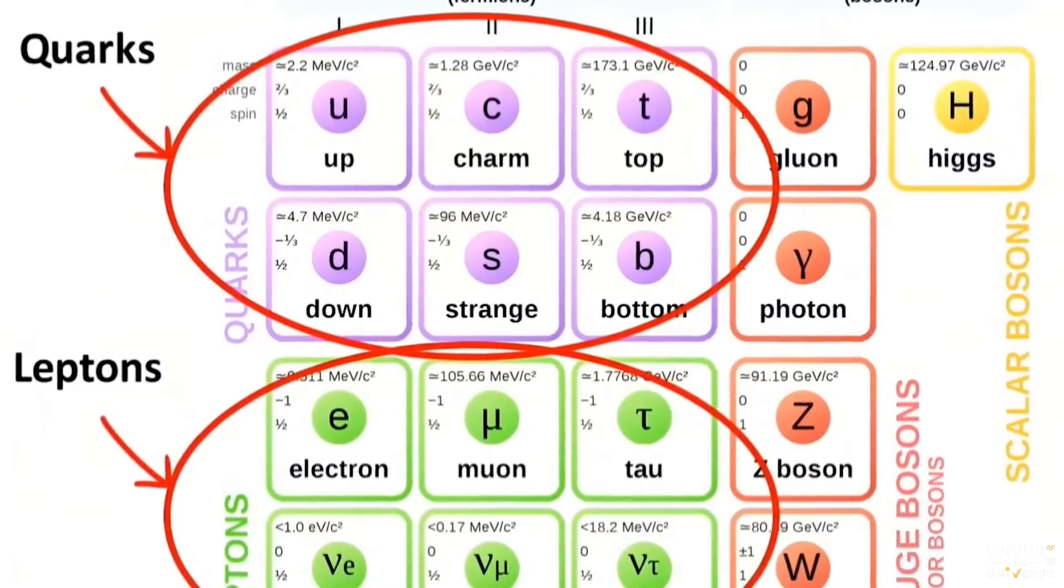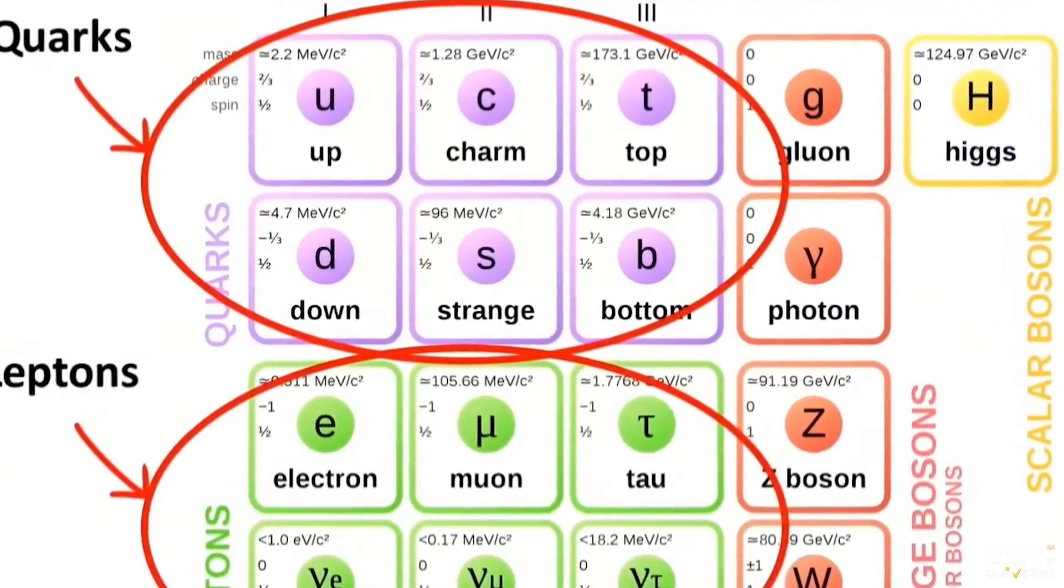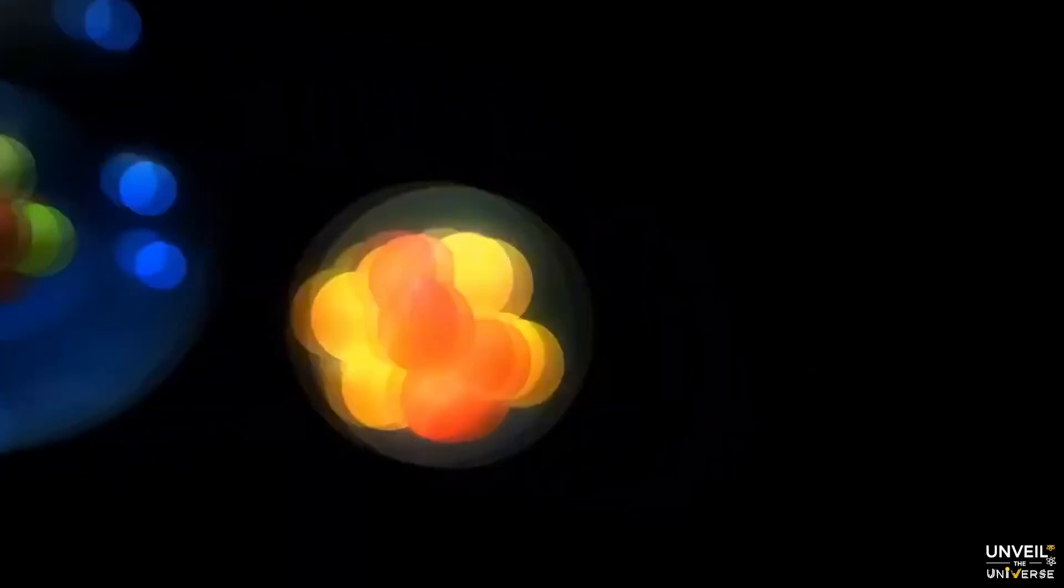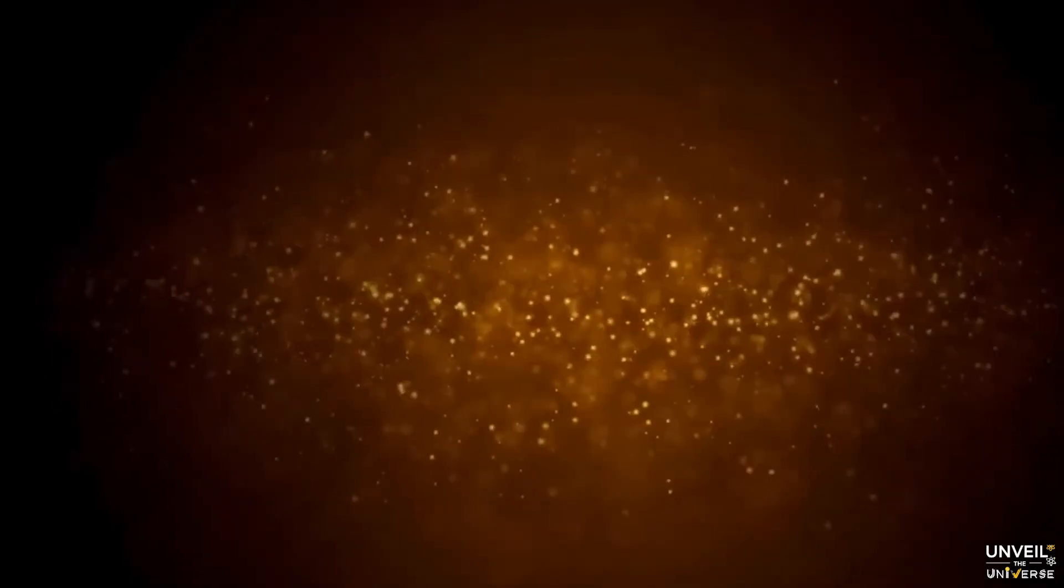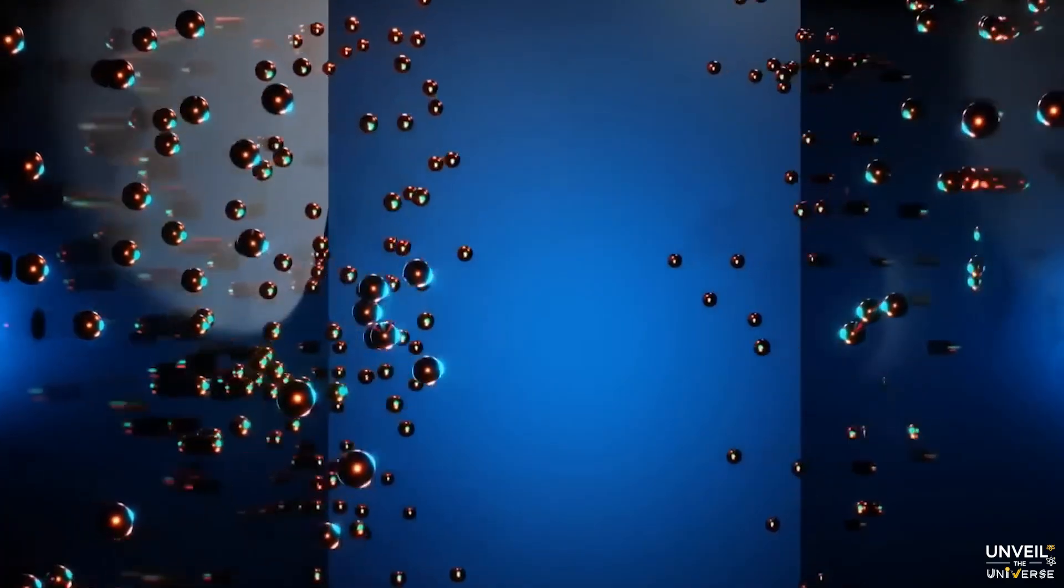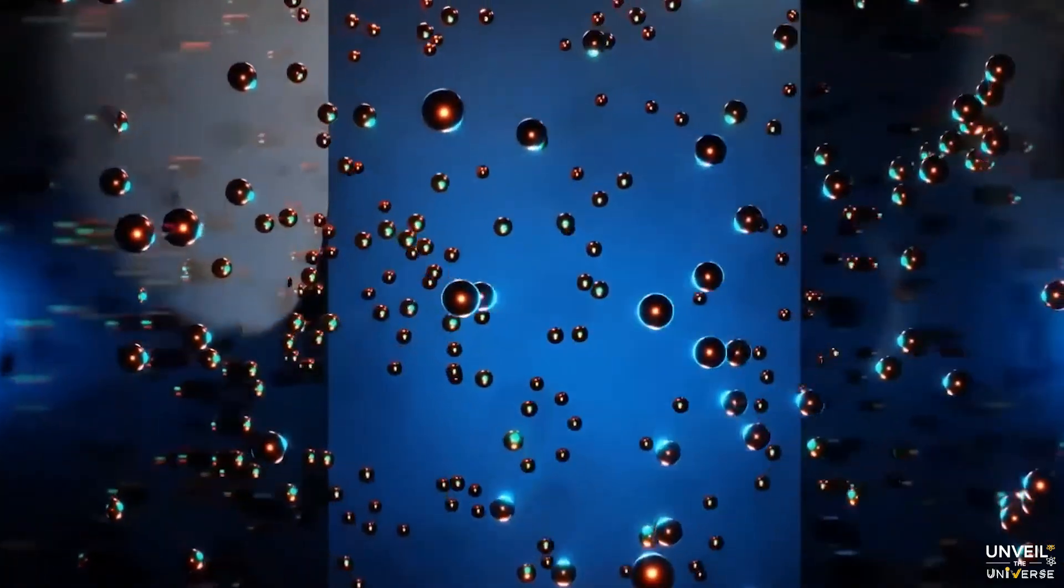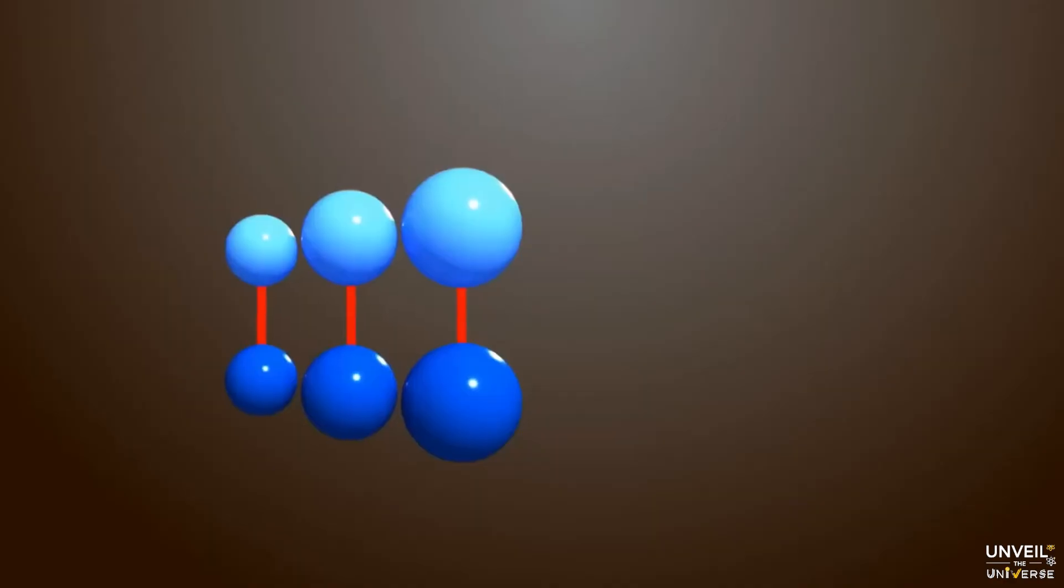Quarks and leptons, the fermions, matter's building blocks. Fermions are further classified into three generations, where particles in the first generation are the lightest and most stable, while heavier, less stable particles belong to the second and third generations.